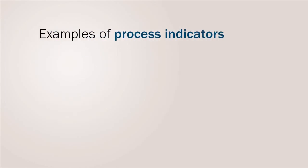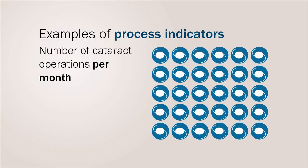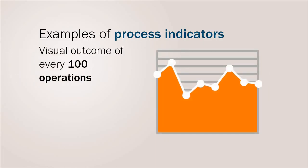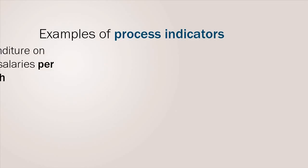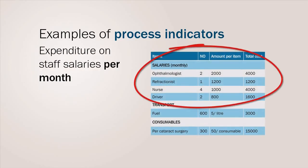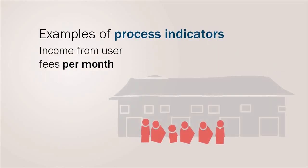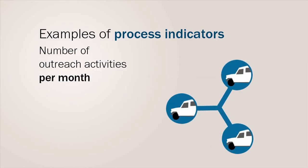Here are some examples of process indicators: number of cataract operations per month; visual outcome of every 100 operations; number of patients diagnosed with refractive errors per month; expenditure on staff salaries per month; income from user fees per month; and number of outreach activities per month.